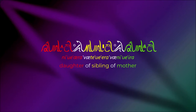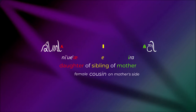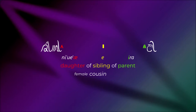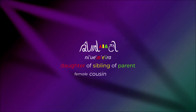Why stop at one referent? Ni-ue-aira fai te-ue-era fai ni-ue-ira describes the daughter of a sibling of your mother — any of your female cousins on mother's side. A word like this is getting pretty long to be practical, which is why it's common to string together liiska — the same way we can with numbers, personal pronouns and colors — turning this into ni-ue-ai-e-era: a short form for 'daughter of sibling of parent,' a female cousin. You can also add a name: ni-ue-ai-e-era re Katie — my cousin Katie.